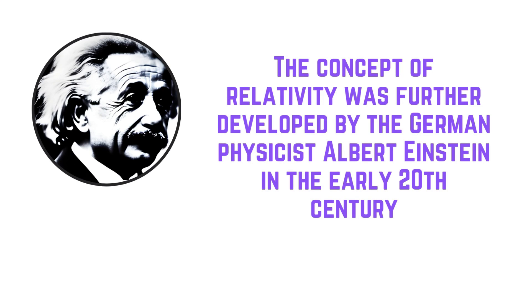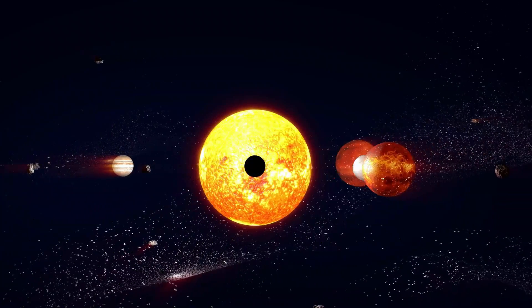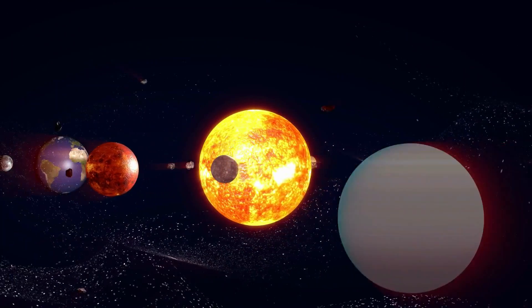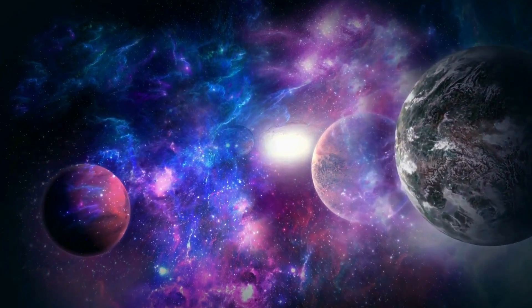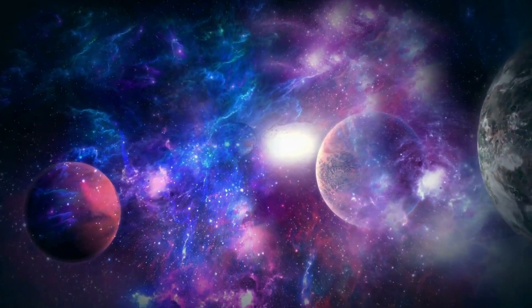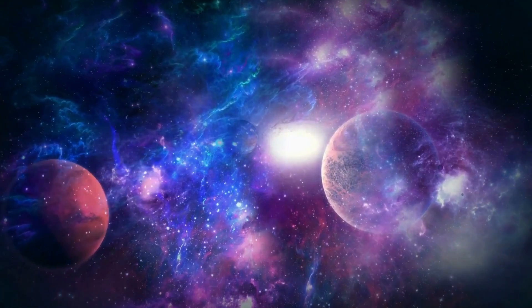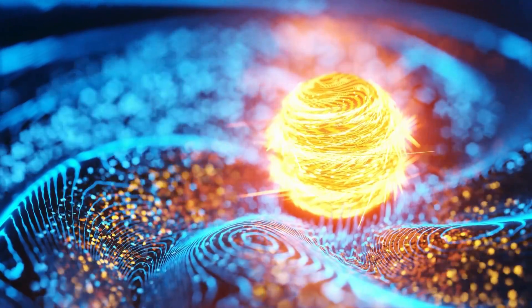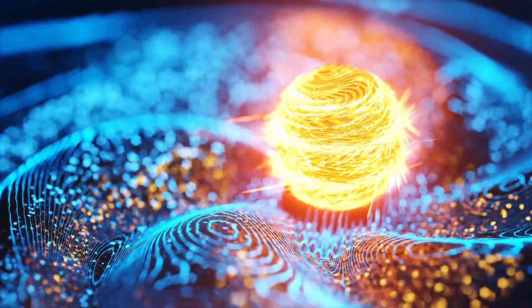The concept of relativity was further developed by the German physicist Albert Einstein in the early 20th century. Einstein's theory of special relativity showed that the Laws of Physics were the same for all observers in uniform motion, and that the speed of light was a constant for all observers, regardless of their state of motion. This theory revolutionized our understanding of space and time and laid the foundation for Einstein's later work on the theory of general relativity, which incorporated the effects of gravity into the framework of relativity.